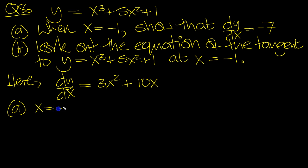So at x equals minus 1, dy/dx will equal 3 times minus 1 squared plus 10 times minus 1. We've input minus 1 for x in both instances here. Minus 1 squared is 1, 3 times 1 is 3.